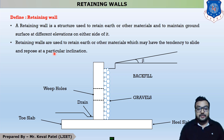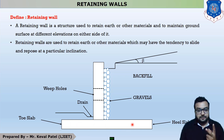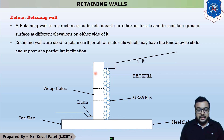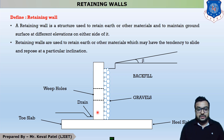In this figure, this is your retaining wall. This is your base slab. In the base slab, there are two components: this is the toe slab and this is the heel slab. This vertical component is called the stem. The retaining wall is a structure to retain some material, some earth.